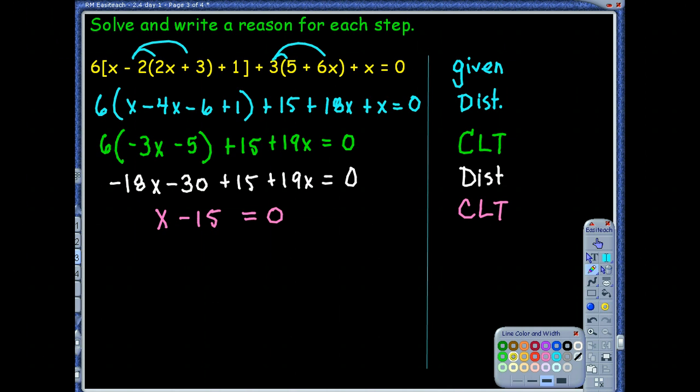And then we want to go ahead and combine some more like terms here. So we're going to have a total of 1x and a total of a negative 15 equals our 0. Combined like terms, so CLT. And the last thing we need to do is move that negative 15 over to the other side. So by adding 15, I'm left with x is 15 and that's APO. And you're done because we got solved for x.